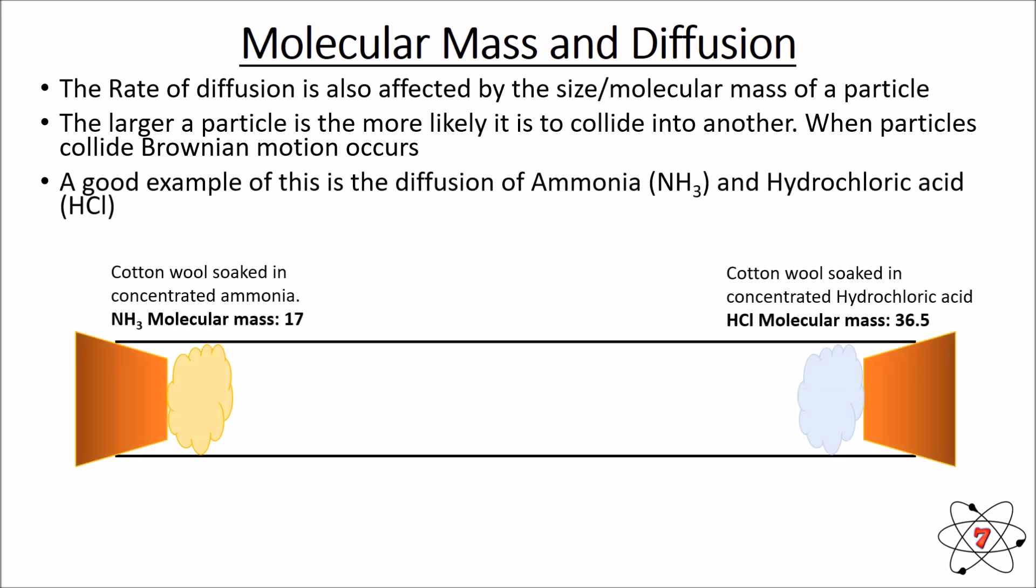So a good example of this is diffusion of ammonia and hydrochloric acid. So at one end, if we take some cotton wool and we soak it with concentrated ammonia, NH3, and we then put a bung in the end and leave it. Ammonia has a molecular mass of 17. At the other end, at exactly the same time, we soak some cotton wool with hydrochloric acid and it must be concentrated hydrochloric acid and hydrochloric acid has a molecular mass of 36.5. So we put this in the other end and we put the bung in.